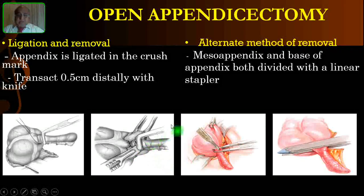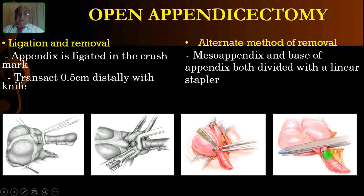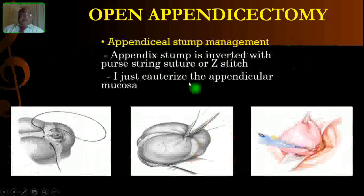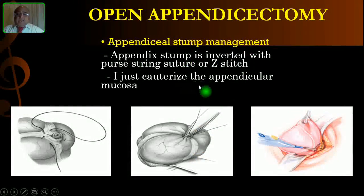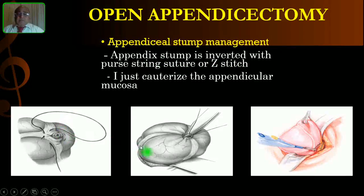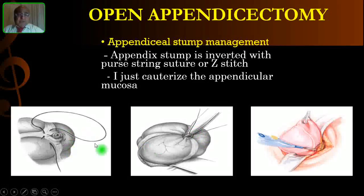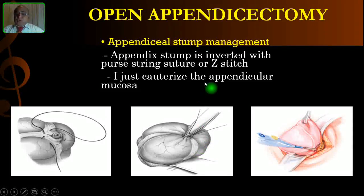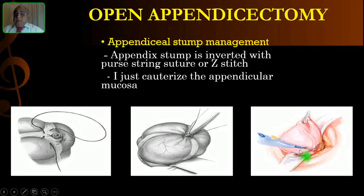As an alternate method, instead of right-angle or artery forceps, you can use a linear GIA stapler — not only in laparoscopic surgery but also in open surgery — to divide both the mesoappendix and the base of the appendix. For the appendicular stump, the classical recommendation is to bury it using a purse-string suture or a Z-stitch, inverting the stump inside to avoid mucosal formation. Personally, I cauterize the protruding mucosa with diathermy and do not bury the stump, and I have had no complications with this approach.